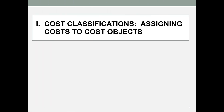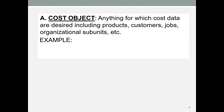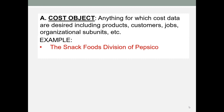One of the ways managers will need to classify cost is according to cost object. There will be two types of cost as we'll see as we go through this material. First, you need to understand what a cost object is — it's really anything that management wants cost or profit data on. A manager may want to know the cost of producing a specific product line, a customer order, or a specific department. Specific examples include the snack foods division of PepsiCo, or the purchasing department for a hospital.